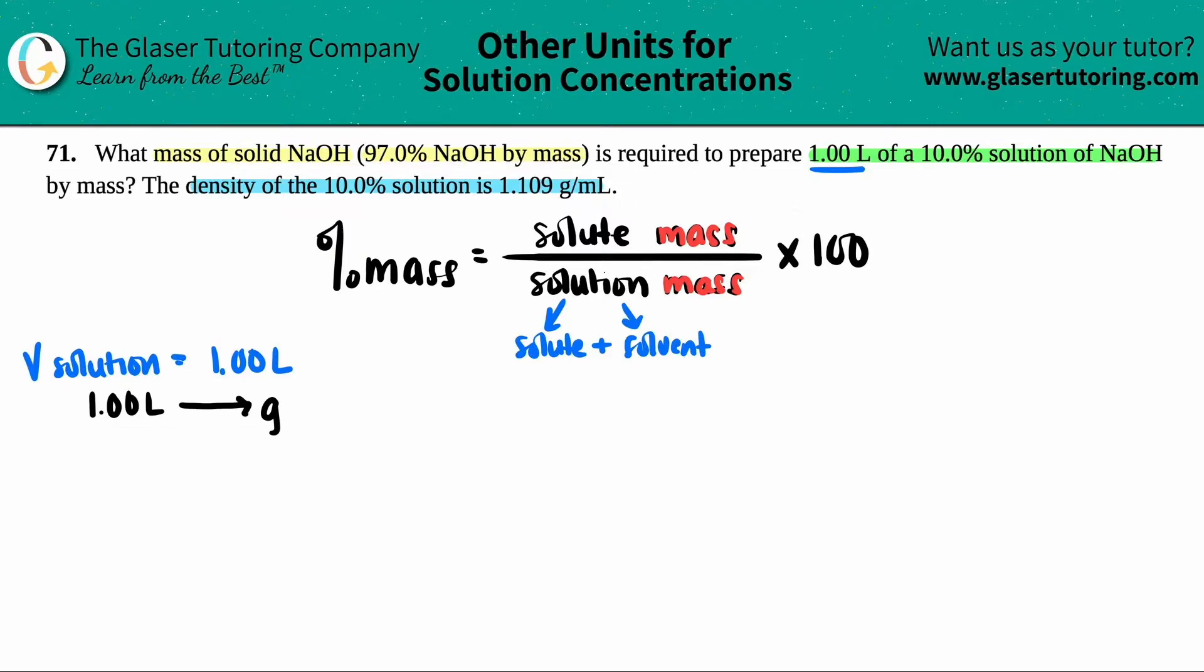But the formula only allows masses, AKA grams. So I have to convert the 1.00 liters somehow into grams. And then I could plug it in on the bottom. Oh, that's why they gave me the density. From before, remember density equals mass divided by volume. So I'm going to be using that formula, but before you do that, you have to make sure that your volume units match. The density, which they told us, which was 1.109 grams per mil, the mass is going to be in grams when we find it. And that's perfect because we were going to use grams, but the volume needs to be in mils.